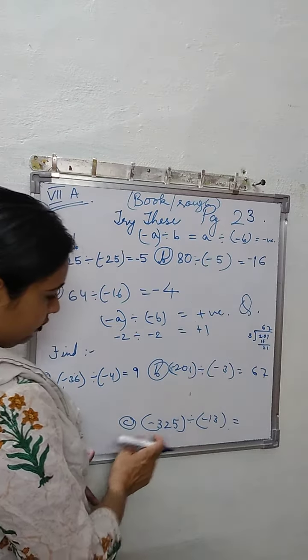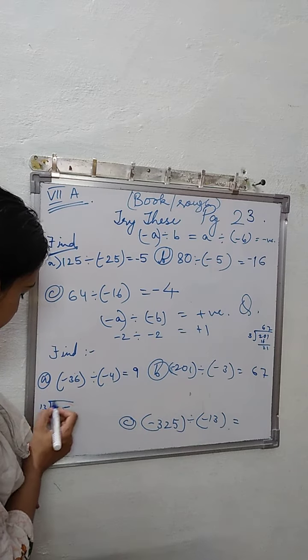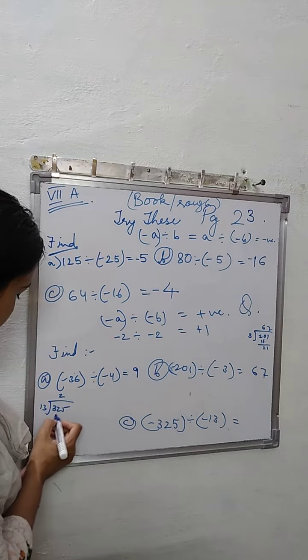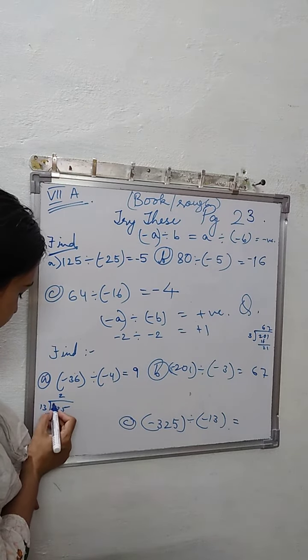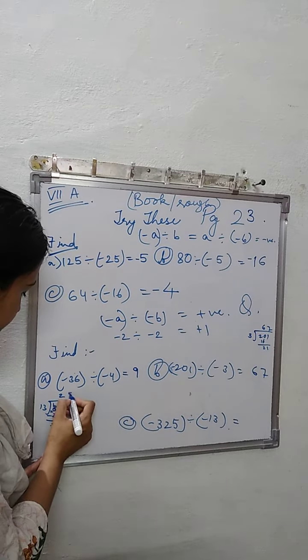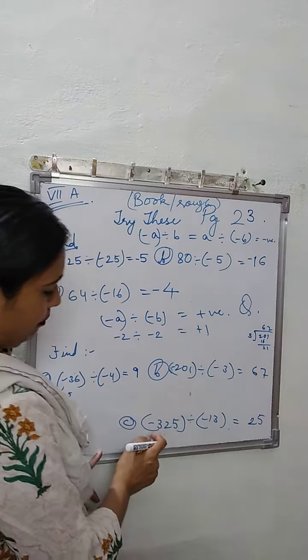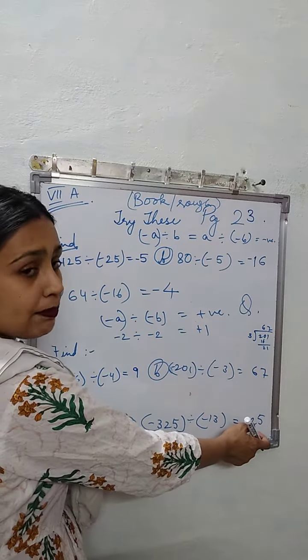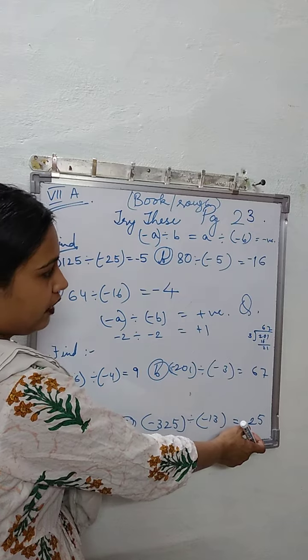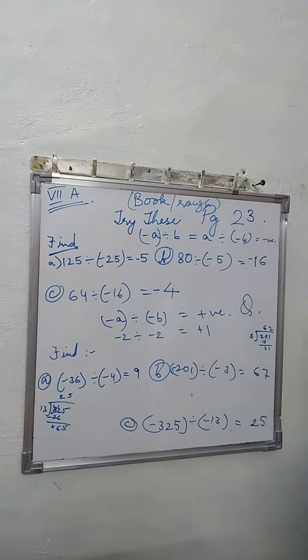Then 325 divided by 13. 13 twos gives us 26. Quickly we will divide and check. 5s will give us 65. That means answer will be 25. Minus minus becomes plus, so positive. It becomes positive. So this completes the Try These of page 23.